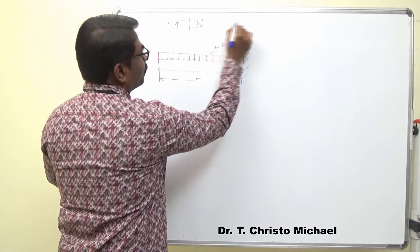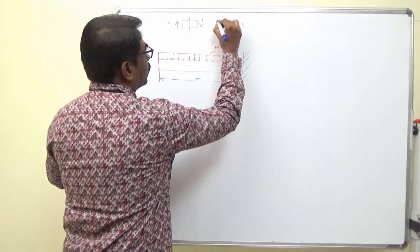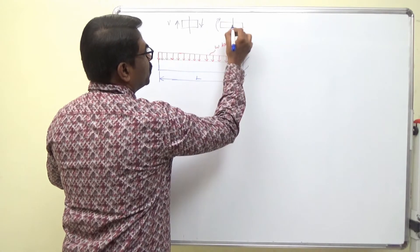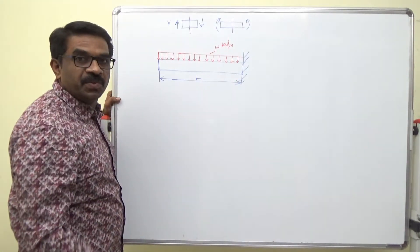For bending moment, clockwise is positive to the left, counterclockwise is positive to the right.